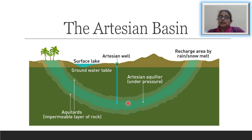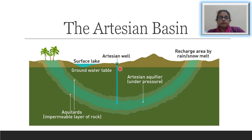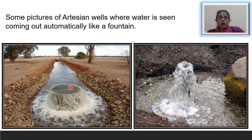This underground reservoir is known as an aquifer — a reservoir where water accumulates. As water keeps its level, it gushes out if a hole is drilled into the water table. The water also flows out of the well automatically like a fountain, as seen in pictures of artesian wells where water gushes out naturally from the aquifer.